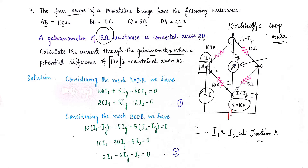At junction B, the current I1 is further divided into two components: Ig, the current passing through the galvanometer, and the remaining current flowing through arm BC, which is I1 minus Ig.